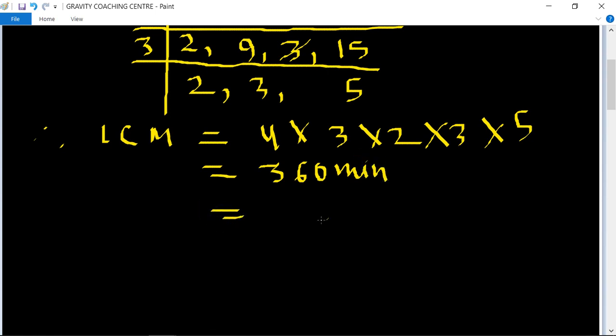Now change into hours. So divide by 60. Cancel the zeros and table of 6: 6 times 6 is 36. So 6 hours.